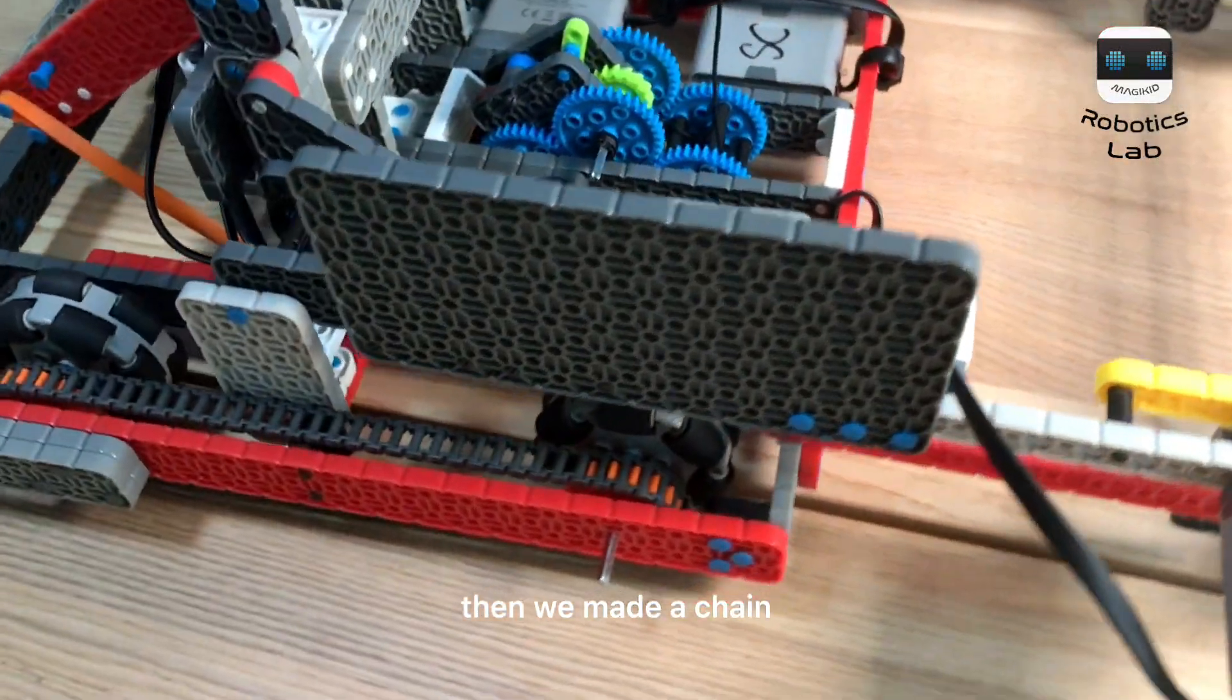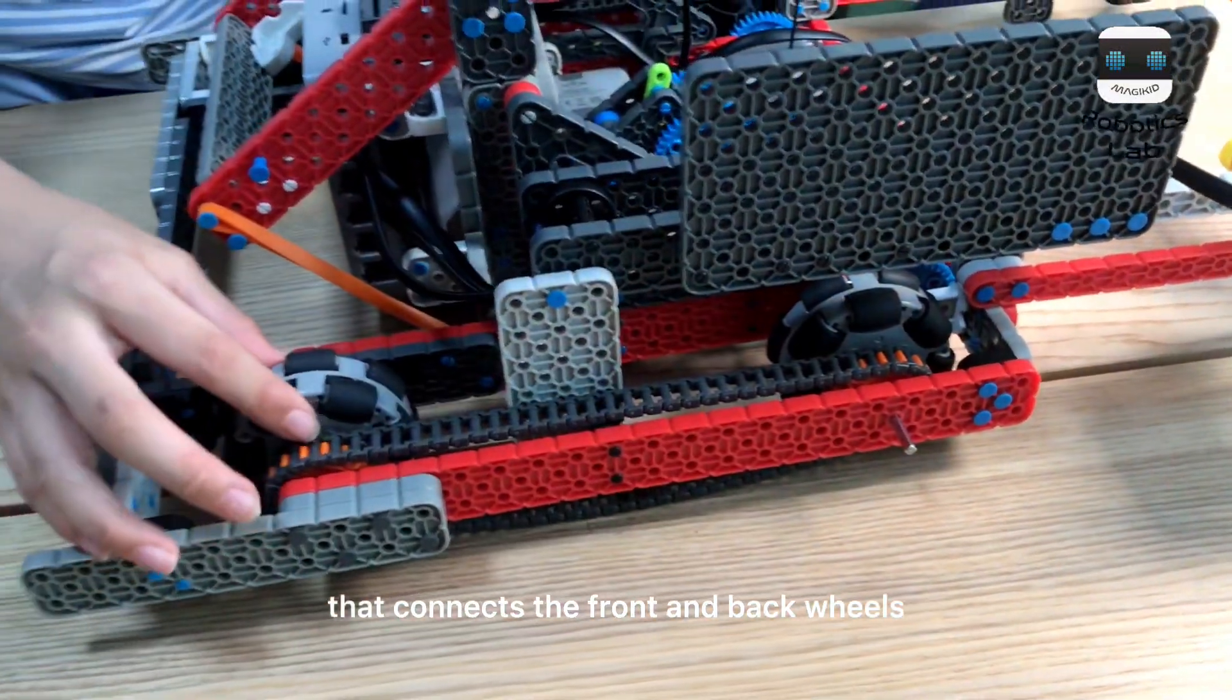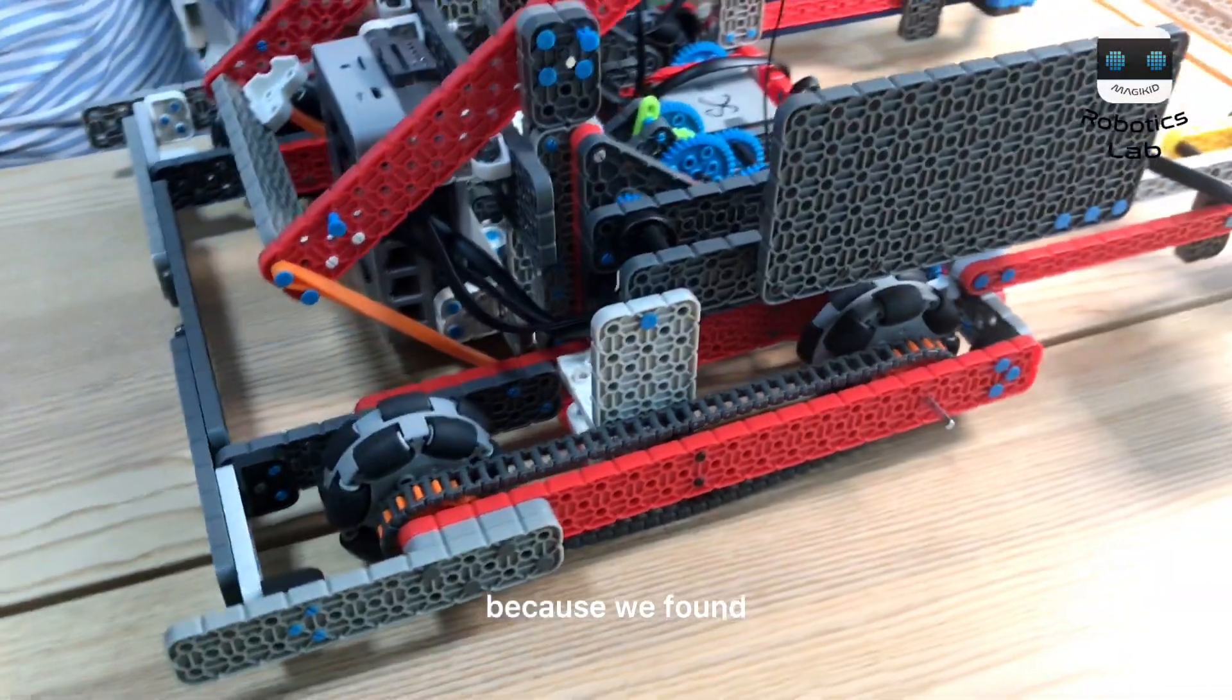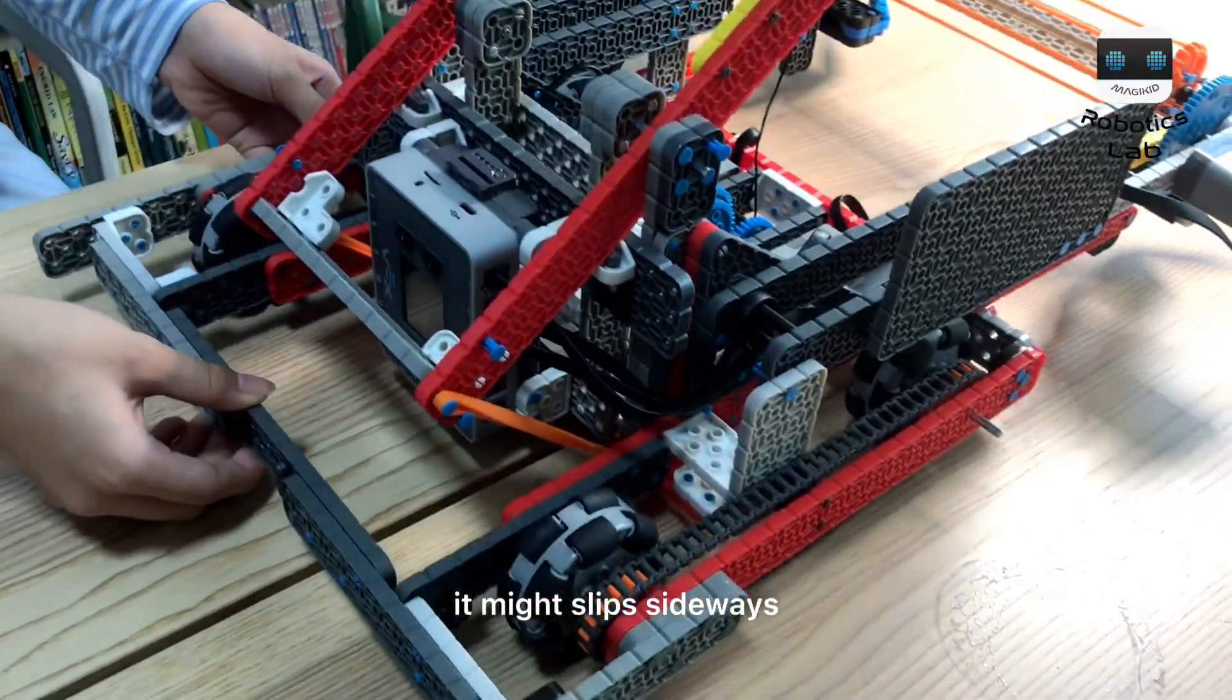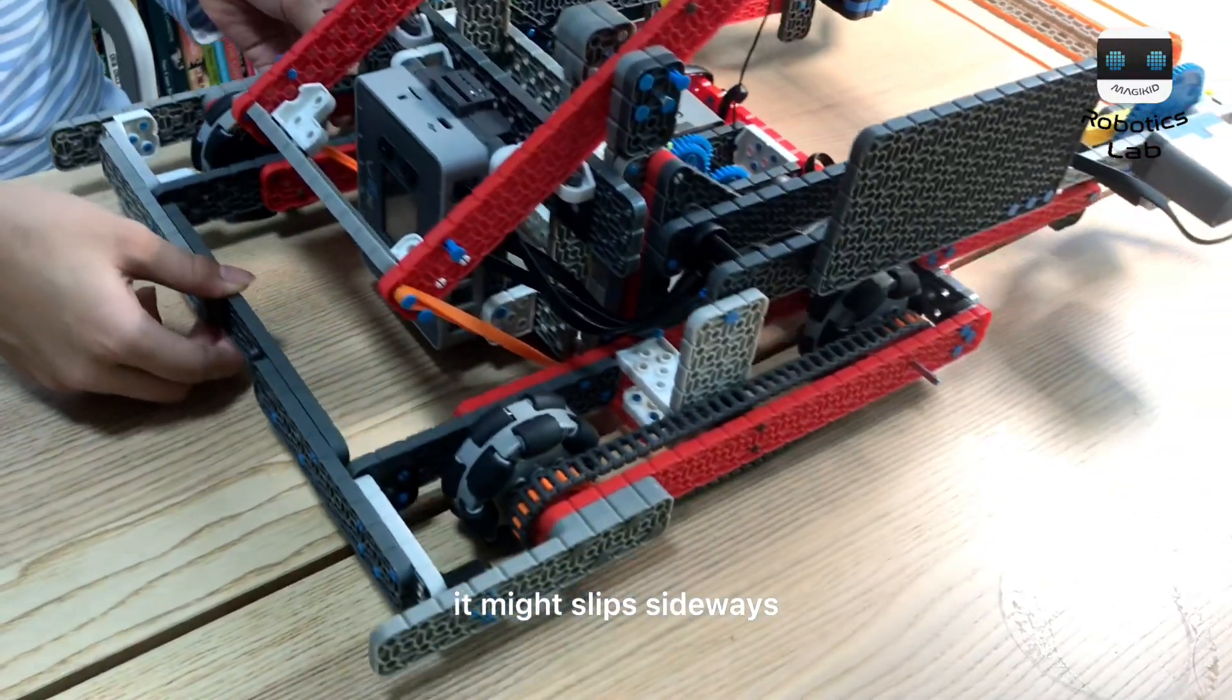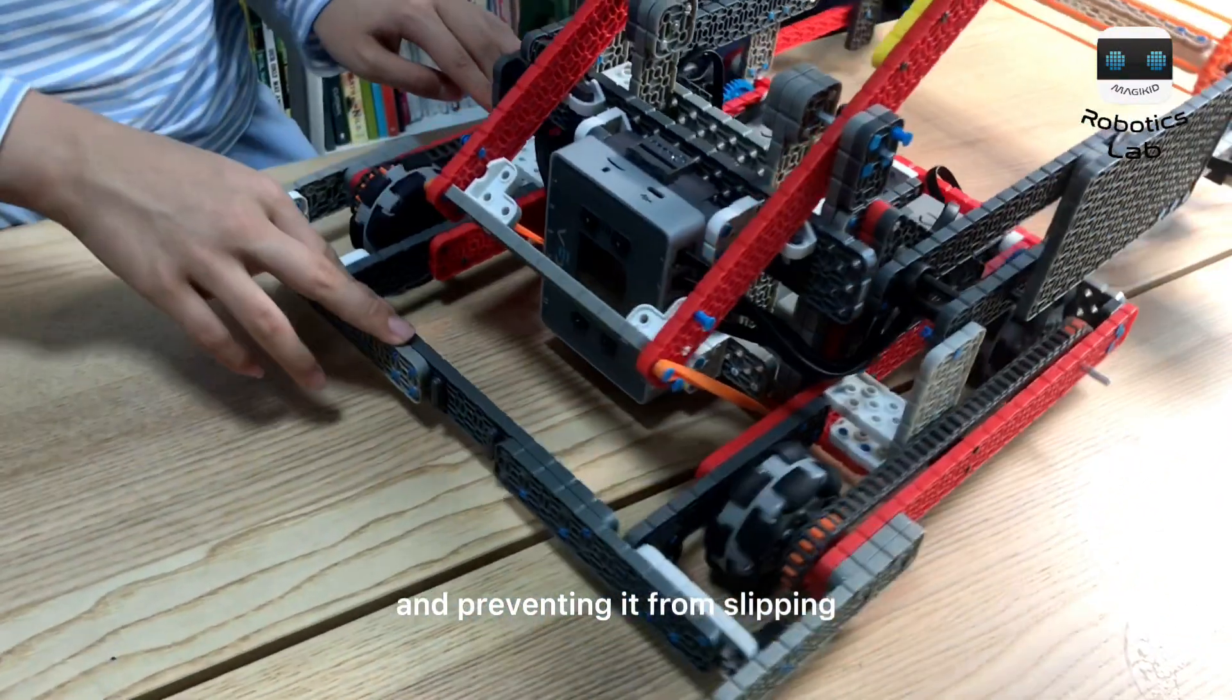Then, we made a chain that connects the front and back wheels, because we found that when we were trying to walk forward, it might slip sideways. This chain can help synchronize the movements of the wheels and prevent it from slipping.